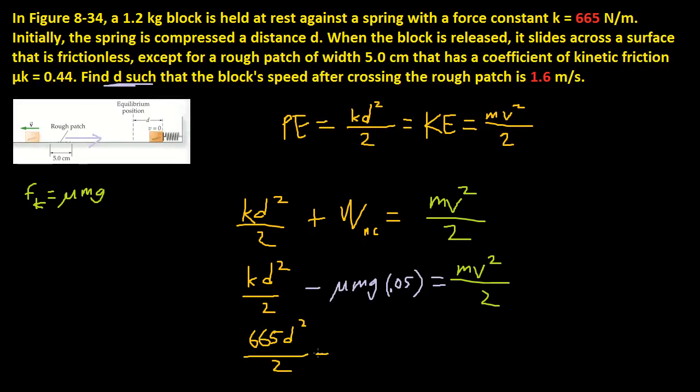I'm just plugging in the numbers now, over 2 minus μ is 0.44. So 0.44 times mass, which is 1.2, times gravity, 9.8, times 0.05, which was 0.05 meters, which was the distance of the patch,